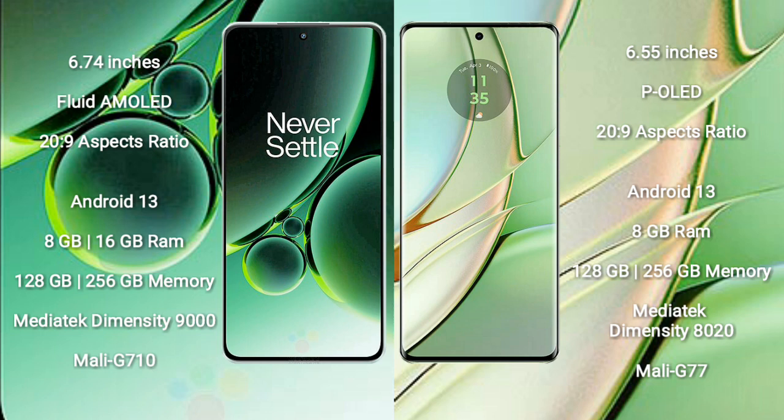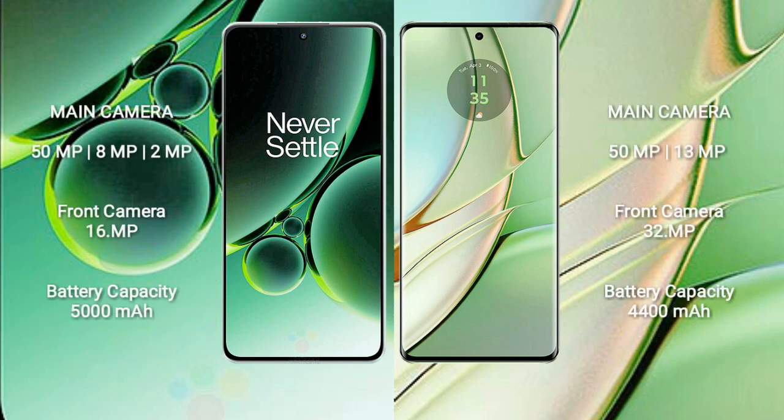OnePlus Nord 3 has a rear triple camera setup: 50MP, 8MP, and 2MP, with a 16MP front camera. Motorola Edge 40 has a rear dual camera setup: 50MP and 13MP.